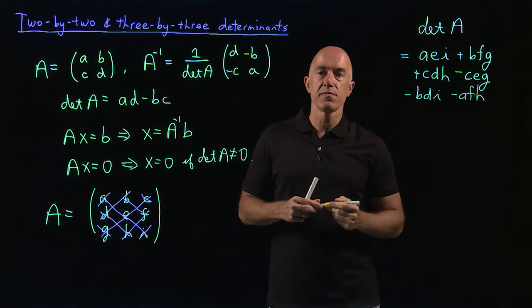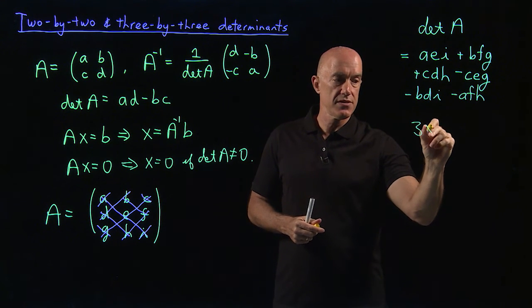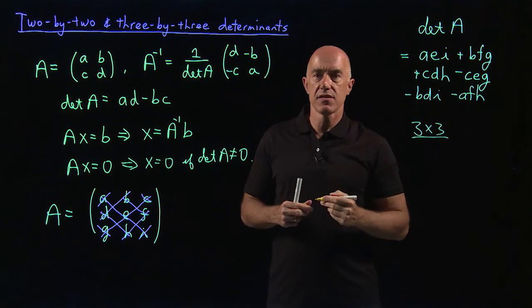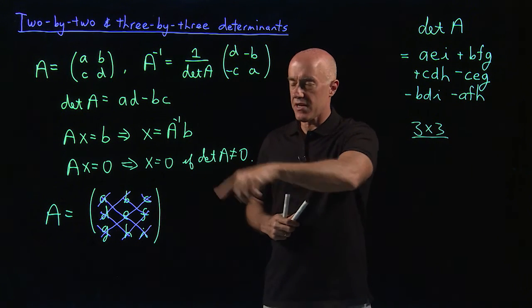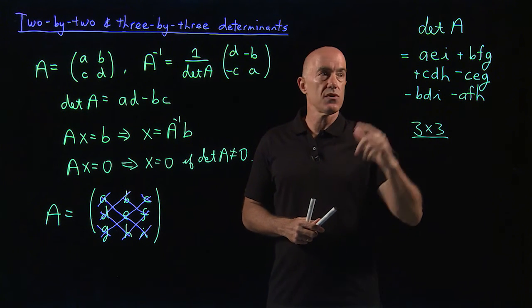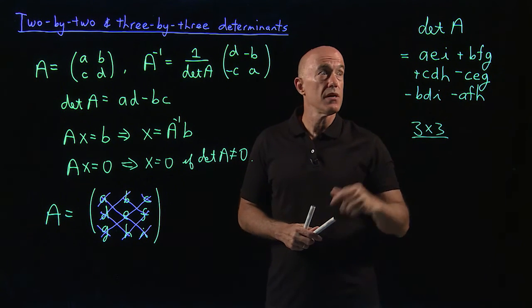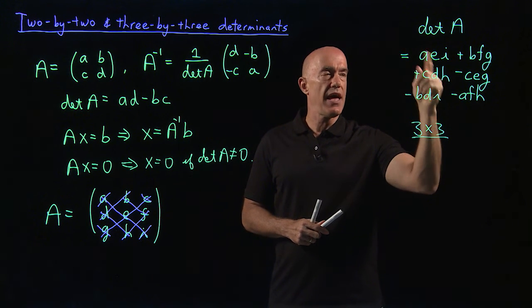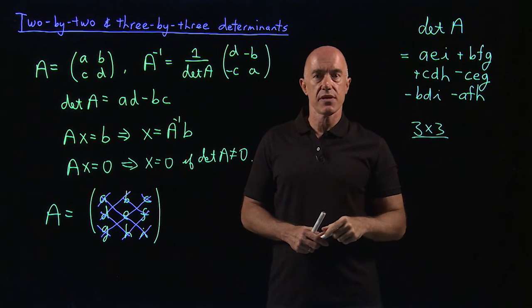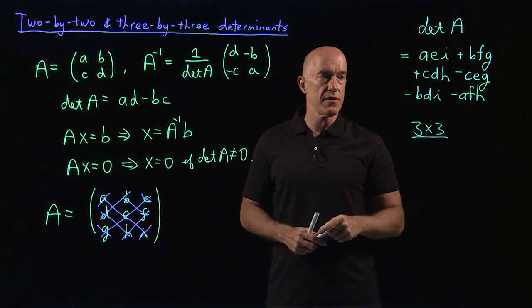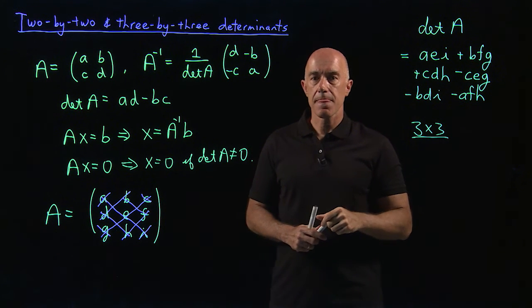So all these six terms form the determinant of a three by three matrix. So this is a very nice, as we say, mnemonic. It's a way of remembering what is the determinant of a three by three matrix. Unfortunately, this trick of drawing diagonals doesn't generalize to n by n. So this only works for three by three matrices. But it's a nice thing to remember. So if the determinant of A is not equal to zero, then A is an invertible matrix. And Ax equals B has a unique solution. So that's true for the two by two matrix. That's true for the three by three matrix.